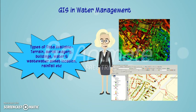GIS can be used to store information, such as terrain data, area boundary, buildings, water or wastewater or asset locations, rainfall, and more.